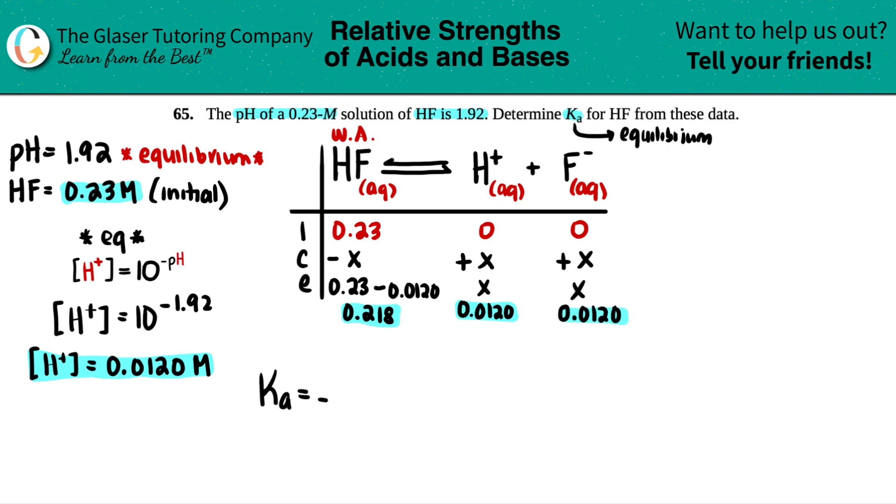If the pH was at equilibrium, the H plus is at equilibrium. And look, we said that that was X. So we can say that this X value is really 0.0120. And look, this is also X. So if we say that this is X and this is also X, this has to be the same number. And if this is 0.23 minus X, this is literally minus 0.0120.